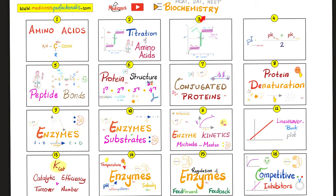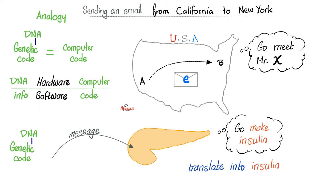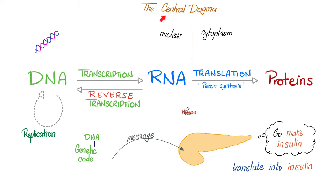Just like computer code is on the computer, the genetic code is on your DNA. Its function is to send a message — to make proteins like insulin. We need to translate that message from meaningless codons into meaningful proteins. And there you go — the central dogma.